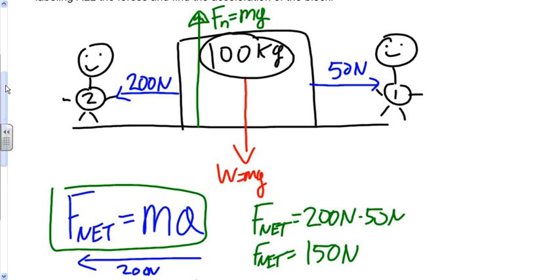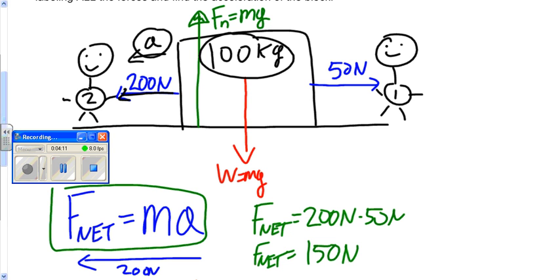And also, just to point out, since person two is pulling with a greater force than person one, we know that the acceleration must be in the direction of person two. All right, thanks for listening, and I hope this helps.